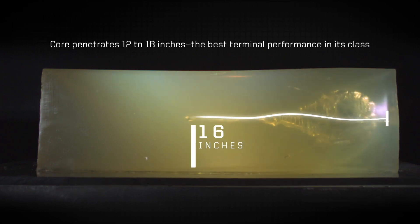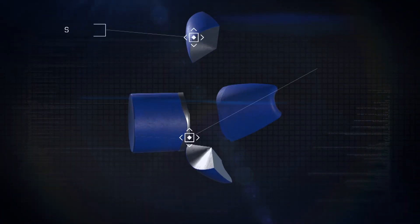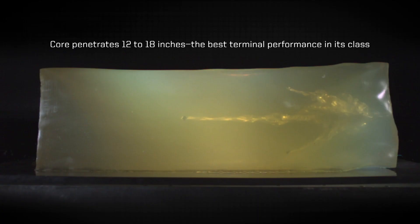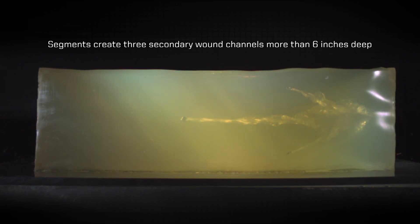In a segmenting design, we're crushing tissue with that deep penetrating core, but then we're diverting off three additional segments that go in their own wound channels. You have an additional chance of hitting other important tissues or creating additional bleeds and more tissue damage in a different way than a conventional hollow point.